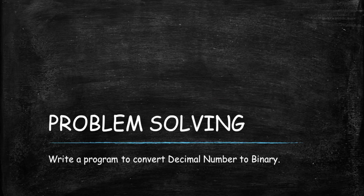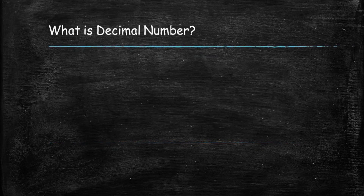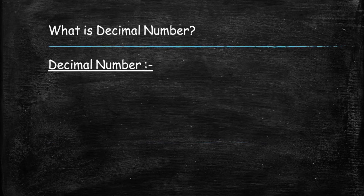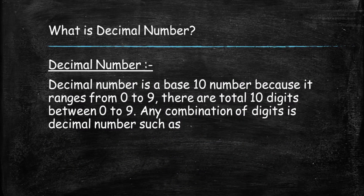Hello, welcome to tutorial4u channel. In this video we will write a program to convert a decimal number to binary number. First of all, what is a decimal number? A decimal number is a base 10 number because it ranges from 0 to 9. There are total 10 digits between 0 to 9, and any combination of these digits is a decimal number.